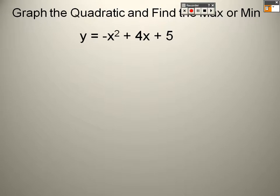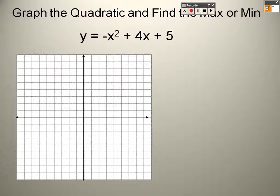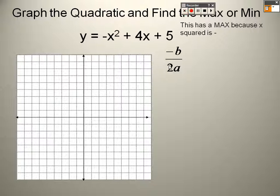Alright, graph the quadratic and find the max and min again. So this is negative. Because it's negative, that means I'm finding my max, because I know the graph's going to look like this. So I know I'm finding a max. So when I go about this, it's negative b over 2a.